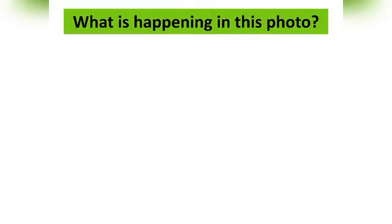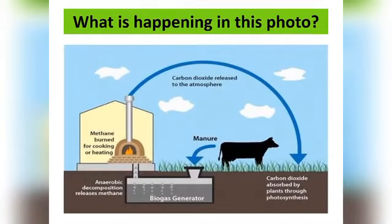Now I want you to observe this photo and tell me what is happening. We have an animal there that is releasing its dung, or manure for that matter, and there is a biogas generator. So in a nutshell, we are producing biogas. You can see how animals are very, very important. This biogas that is generated is used for cooking, for heating, and so on.